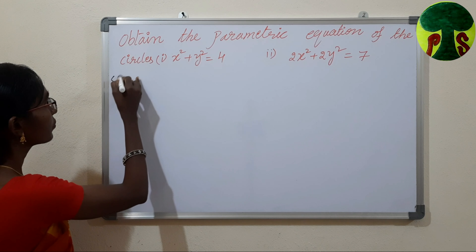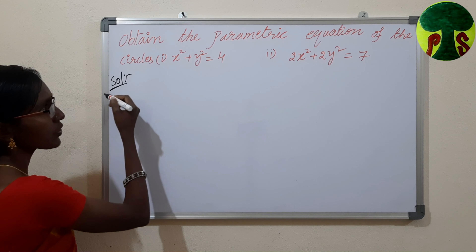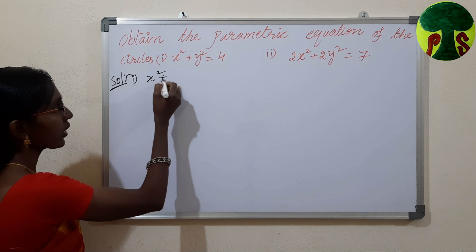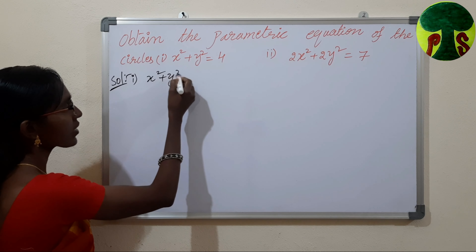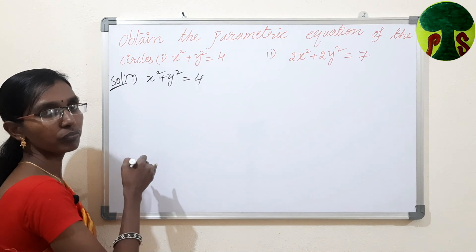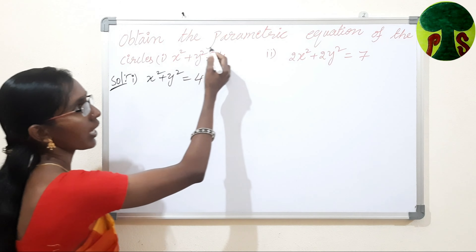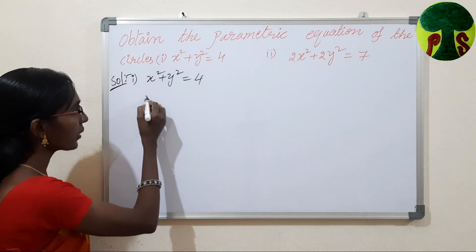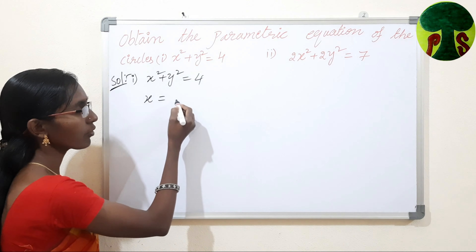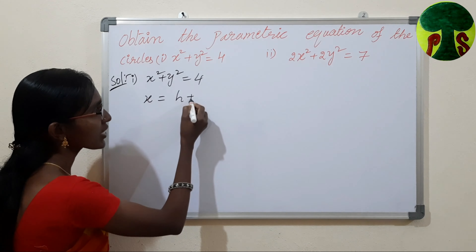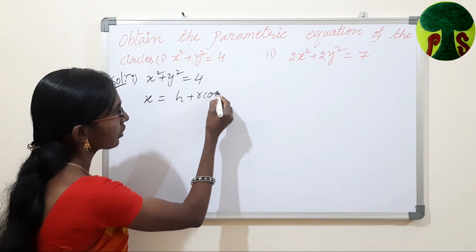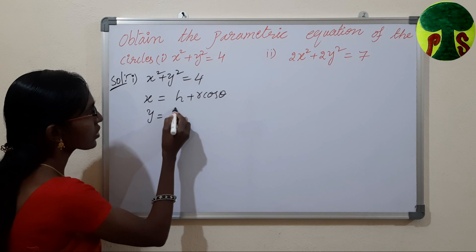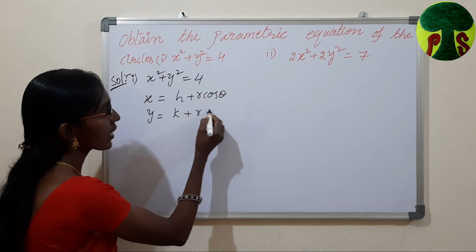Solution. What is the first circle equation? The equation of the circle is x squared plus y squared equals 4. We need to find the parametric equation. The formula to find the parametric equation is: x equals h plus r cos theta, and y equals k plus r sin theta.